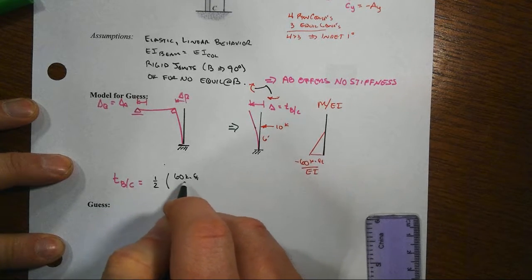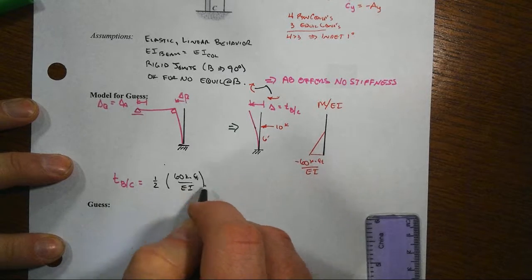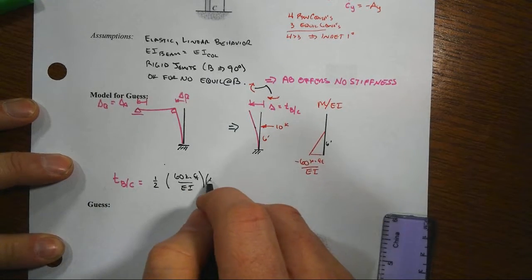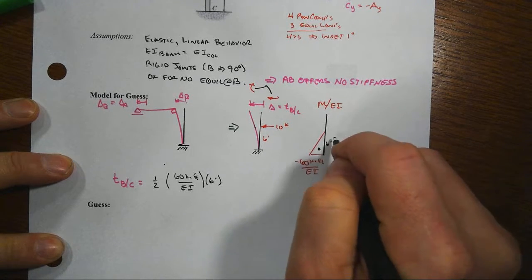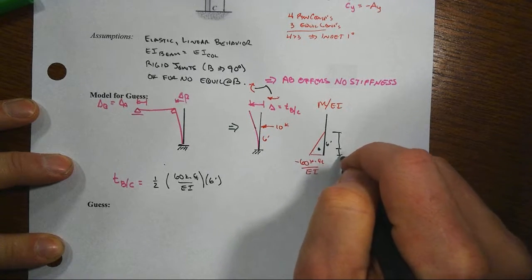60 kip foot over EI is the base of that triangle. The height of it is six feet. Then we need the moment arm. All right, so that's going to be down here. So that's going to be at four foot, two foot.